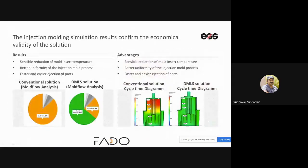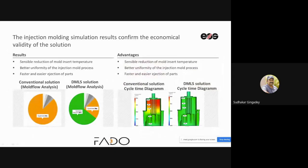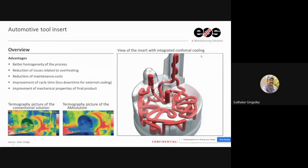Thermographic images confirm: conventional molds show high heat (all red) at the mold surface, while additive-manufactured conformal-cooled molds show rapid, uniform heat dissipation with no concentrated hot zones, confirming the effectiveness of the cooling channel design.